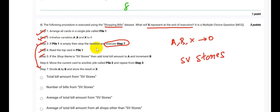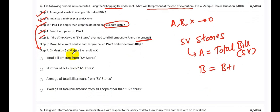Remember, we need to execute step 7 if the pile is empty. Read the top card in pile one. If the shop name is SV Stores, then add total bill amount to A. That means A stores the total bill of SV Stores. And increment B, that means B equals B plus one. So here, B stores the number of occurrences of SV Stores. B will give you the number of times SV Store cards are encountered by the user.